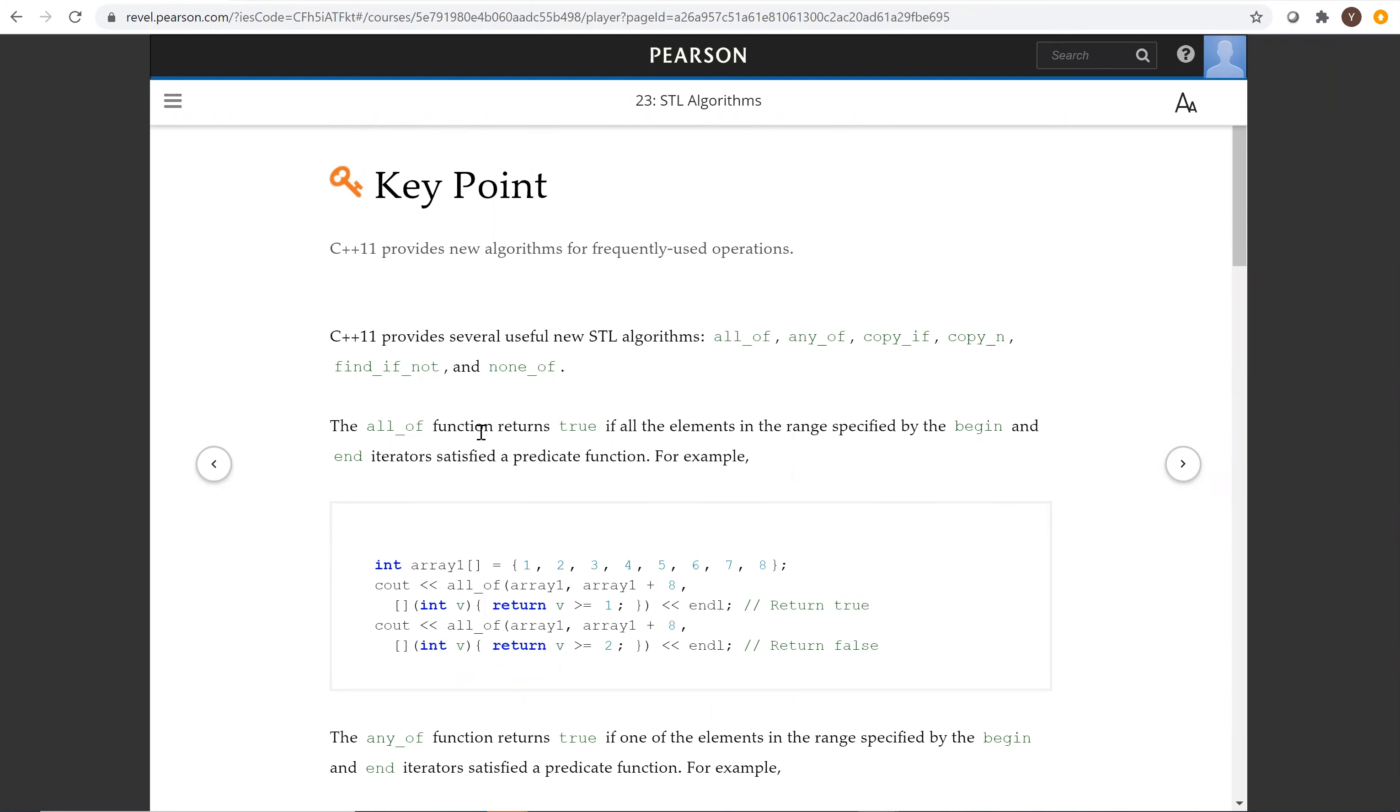The allOf function returns true if all the elements in the range specified by the begin and end iterator satisfy the predicate function. Here we have the array and now we are using allOf from the beginning to the end of the array.